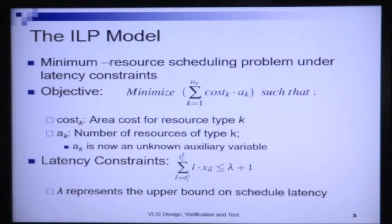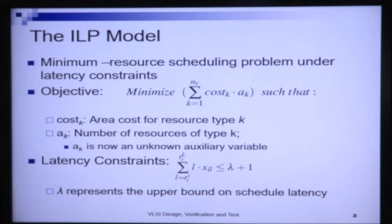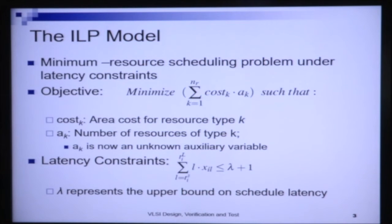Through scheduling I need to find out how many resources of each type I should use, so that I can schedule all operations in my DAG within the given time constraint while minimizing the total area consumed. For example, if I have two resources — adder and multiplier — then a_1 is adder, a_2 is multiplier, cost_1 is the area cost of the adder, and cost_2 is the area cost of the multiplier.